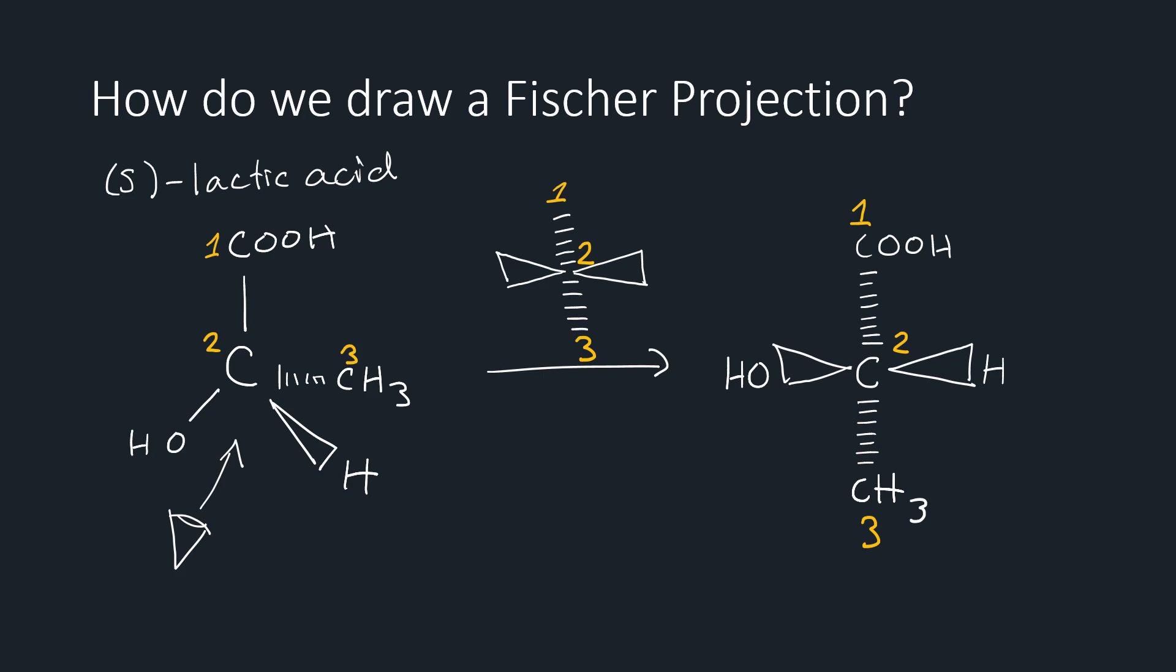From here, all we need to do is replace the wedges and dashes with a line, and remove any central carbon atoms, which will be represented by the intersection between the lines, and our Fischer projection is finished.